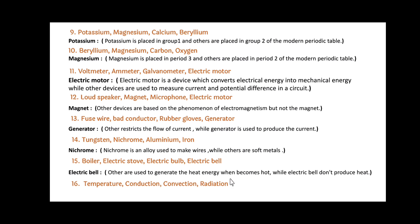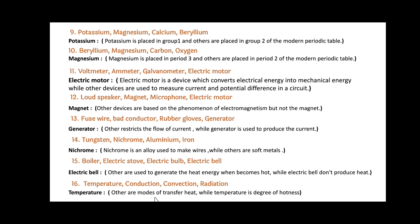Next: Temperature, Conduction, Convection and Radiation. Friends, here Temperature is the odd one out. The others — Conduction, Convection and Radiation — are modes of heat transfer, while Temperature is a measure of degree of hotness.